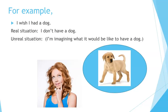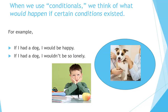For example: I wish I had a dog. The real situation is I don't have a dog. The unreal situation is I am imagining what it would be like to have a dog. When we use conditionals, we think of what would happen if certain conditions existed. For example, if I had a dog, I would be happy. If I had a dog, I wouldn't be so lonely.